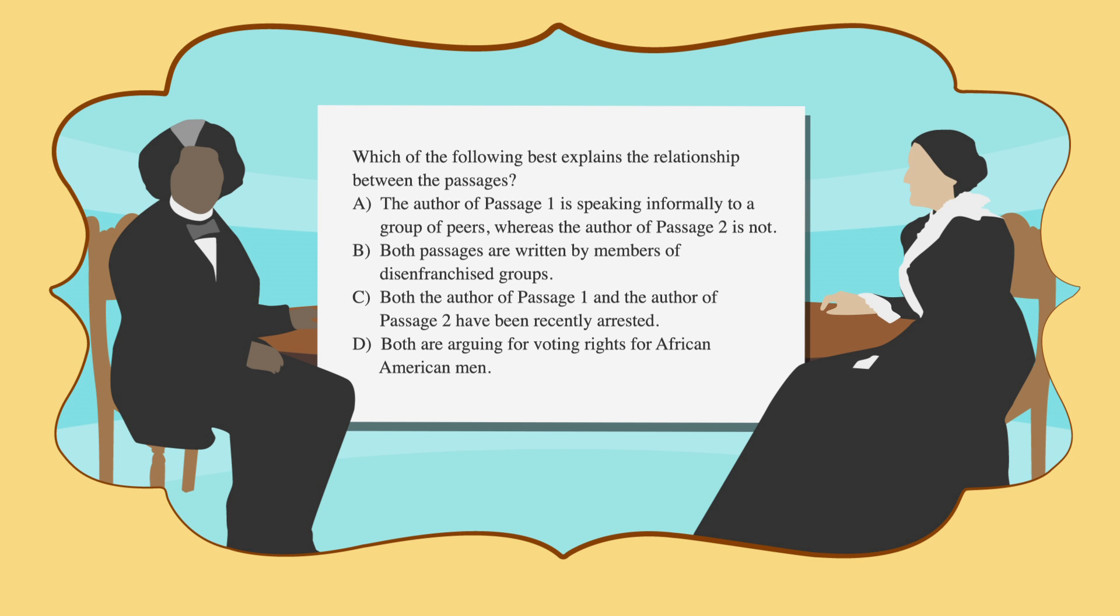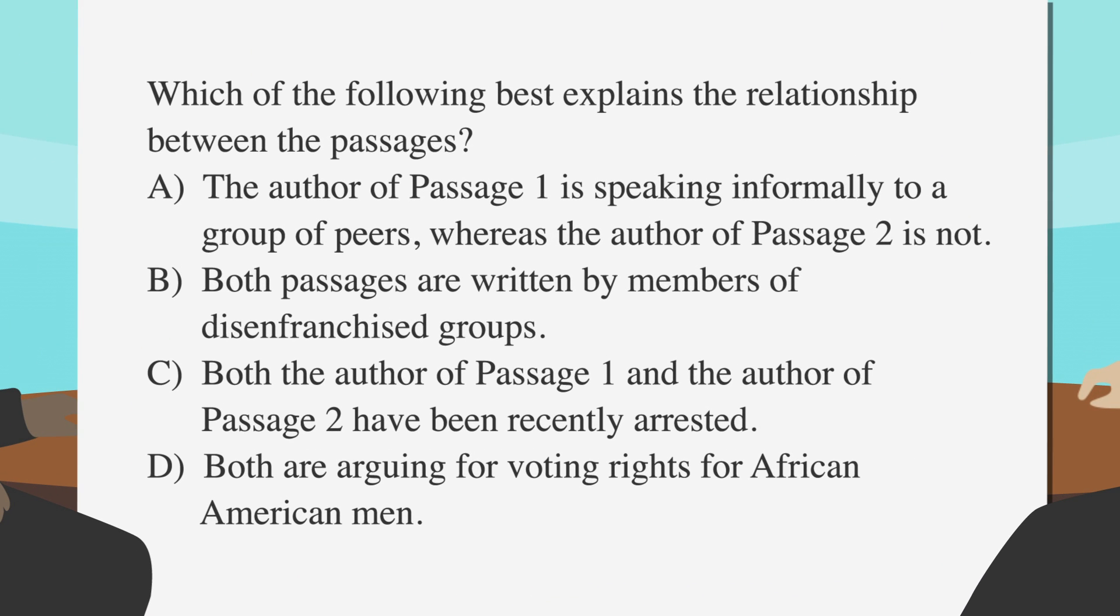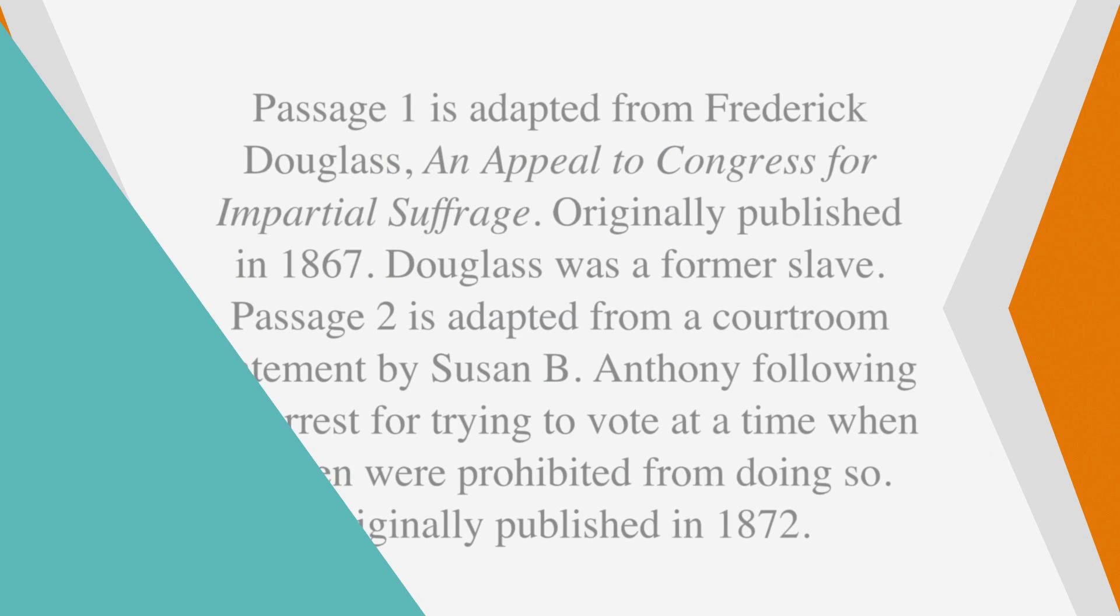For example, let's say that we're given a question about the point of view of two passages. The question asks, which of the following best explains the relationship between the passages? A. The author of passage one is speaking informally to a group of peers, whereas the author of passage two is not. B. Both passages are written by members of disenfranchised groups. C. Both the author of passage one and the author of passage two have been recently arrested. Or D. Both are arguing for voting rights for African American men.